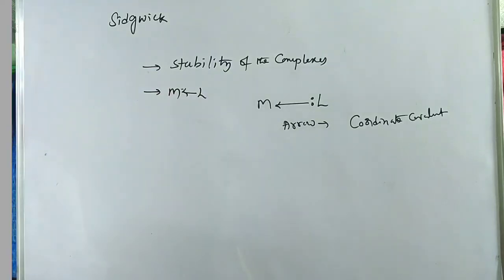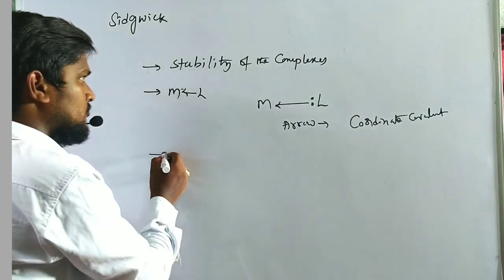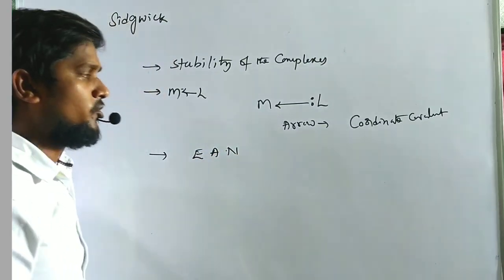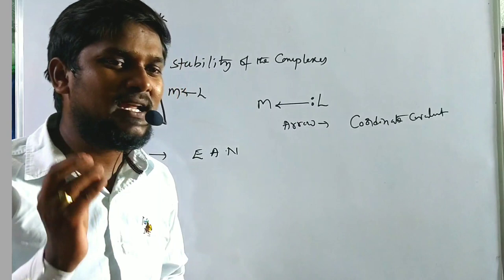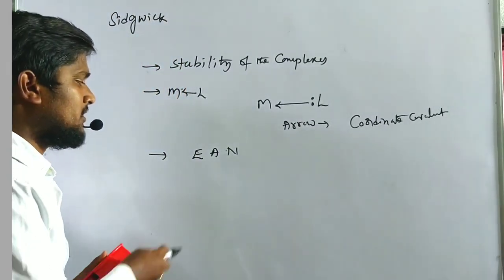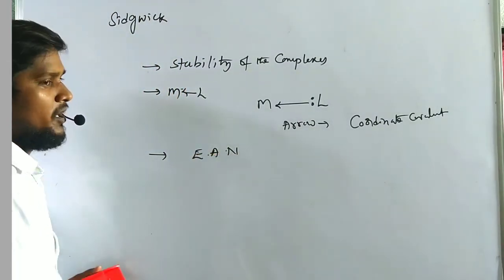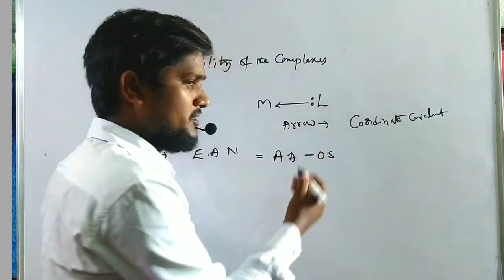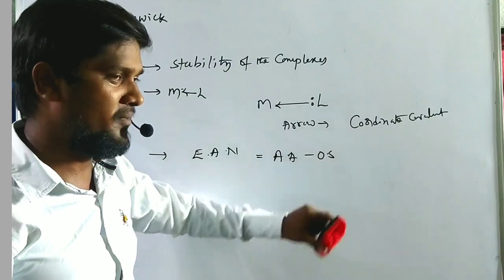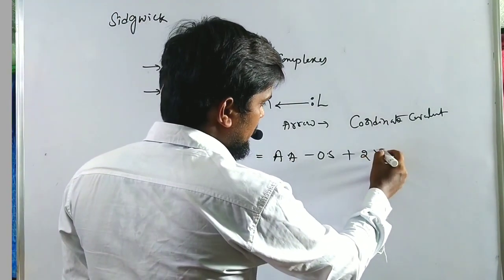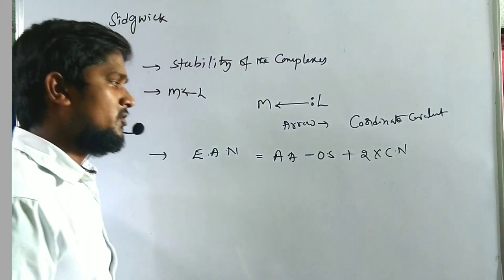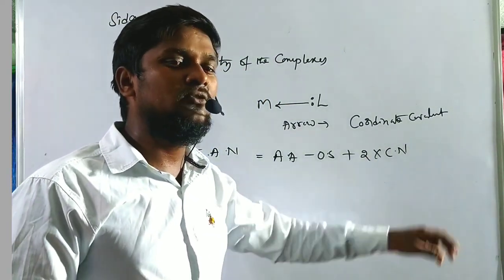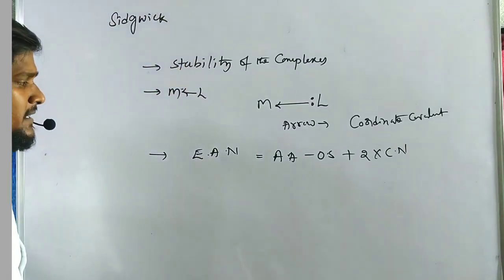Sidgwick theory also provides a mathematical expression to find the stability of complexes through the effective atomic number (EAN). The formula is: EAN = actual atomic number − oxidation state + 2 × coordination number. This is also expressed as: actual atomic number − primary valency + 2 × secondary valency.